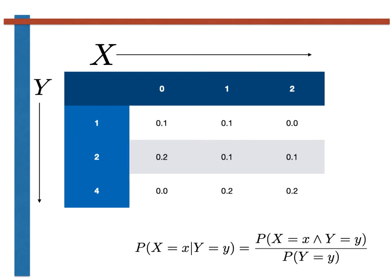We can also use the conditional distribution of X given the values of Y instead of the joint probability mass function — this is an alternative way to describe the joint distribution of these two variables. The conditional probability that X equals small x given Y equals small y is given by the expression shown at the bottom of the slide.